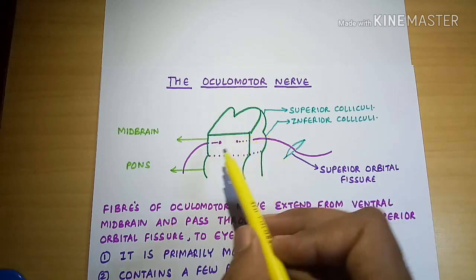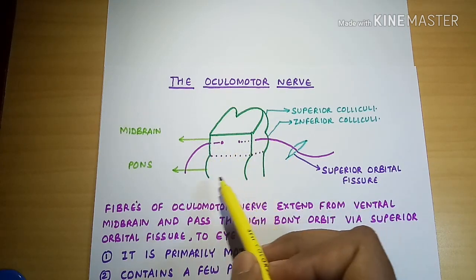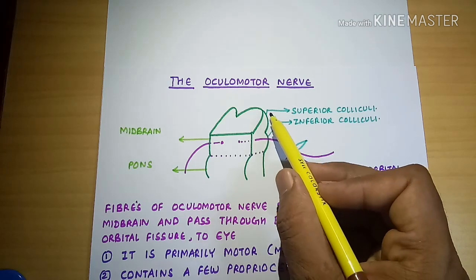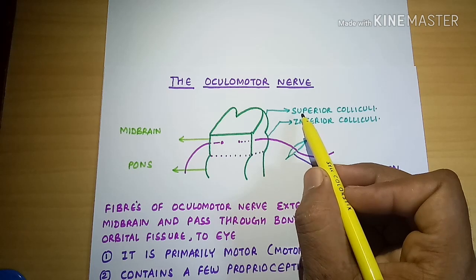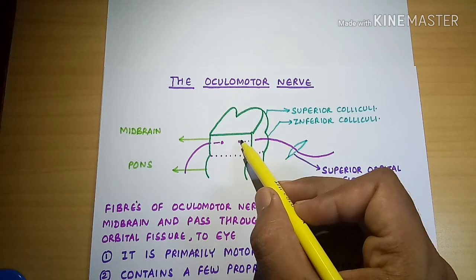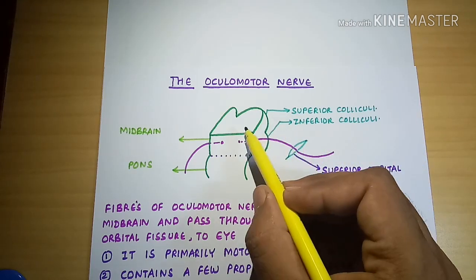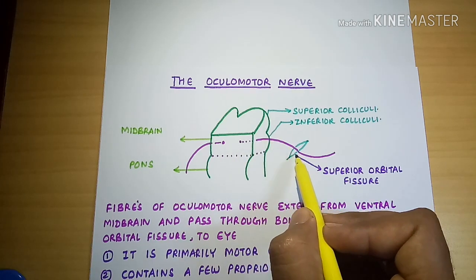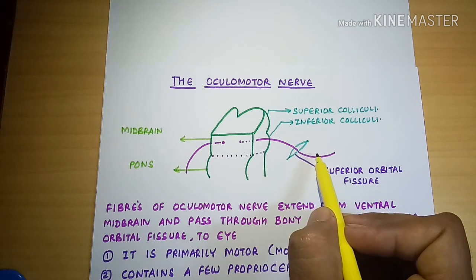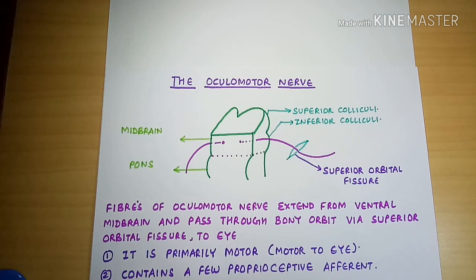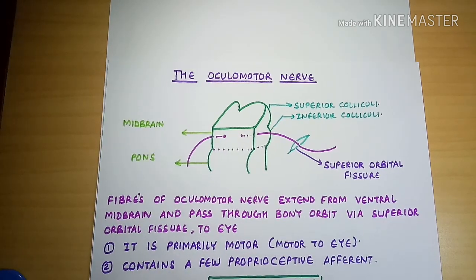If this is the structure of the brainstem, this portion is called the midbrain, and below this is the pons. At the level of the superior colliculus, from the posterior side of the midbrain, there are two colliculi — superior and inferior. At the level of the superior colliculus, the nucleus of the oculomotor nerve is present. The nerve arises from the anterolateral side of the midbrain, passes through the superior orbital fissure, enters the orbit, and supplies four muscles: the superior, inferior, and medial rectus muscles, and the inferior oblique muscle.